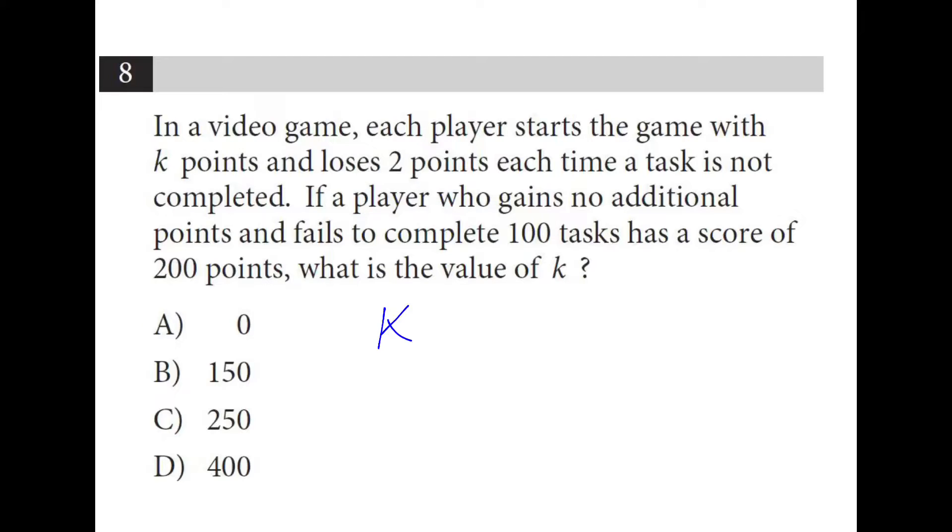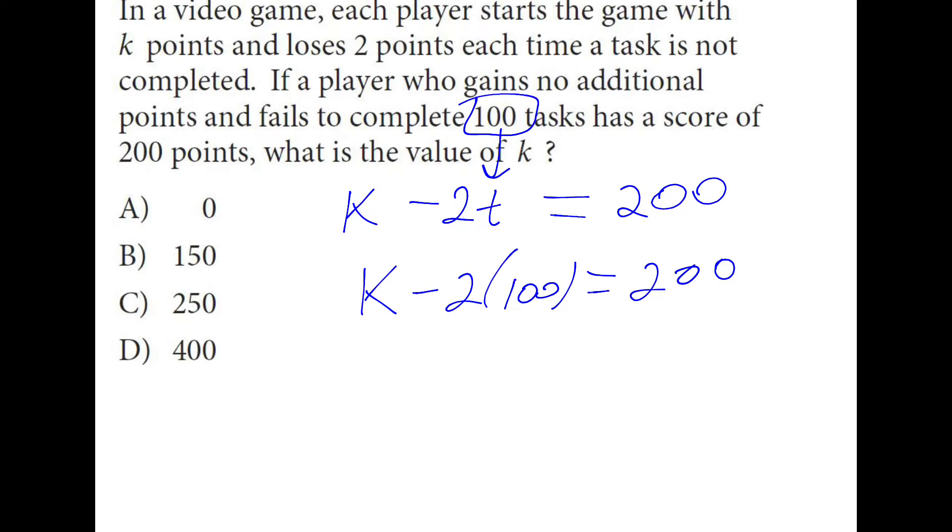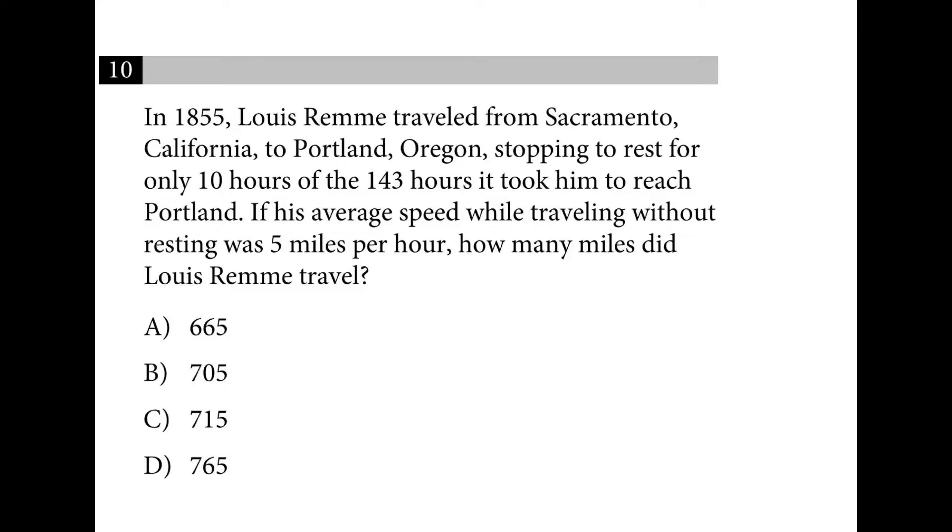You start with k points and you lose two for each task not completed. So here's someone that fails 100 tasks and they end up with 200. We rested for 10 hours, that means we traveled for 133 hours at five miles per hour. 665.